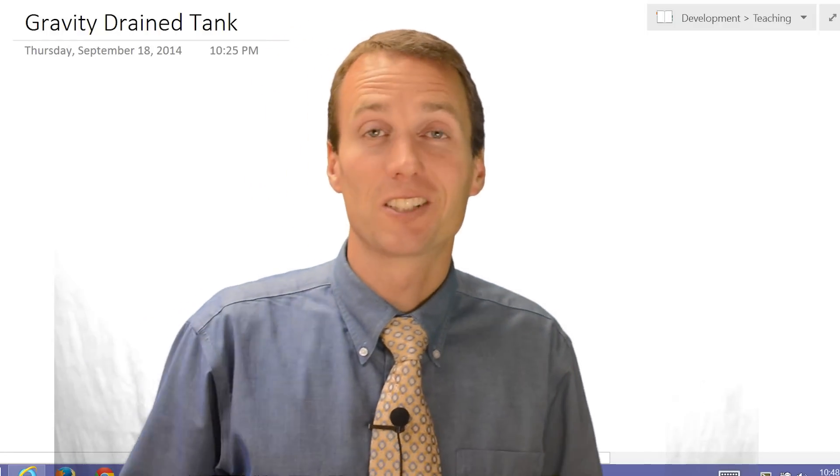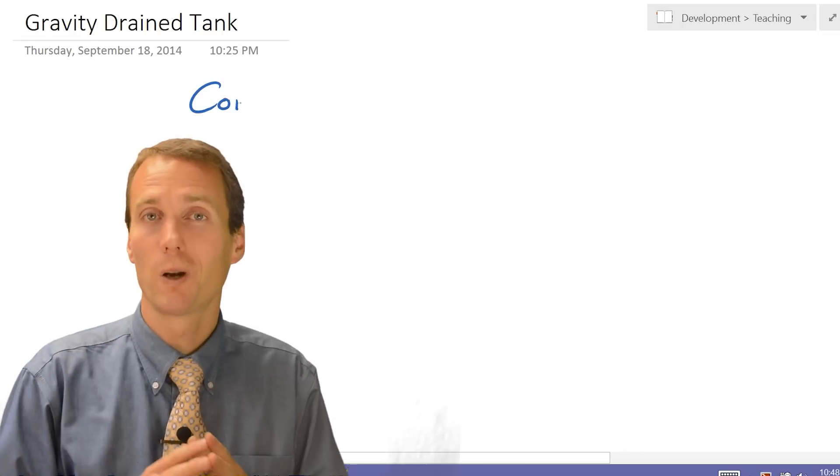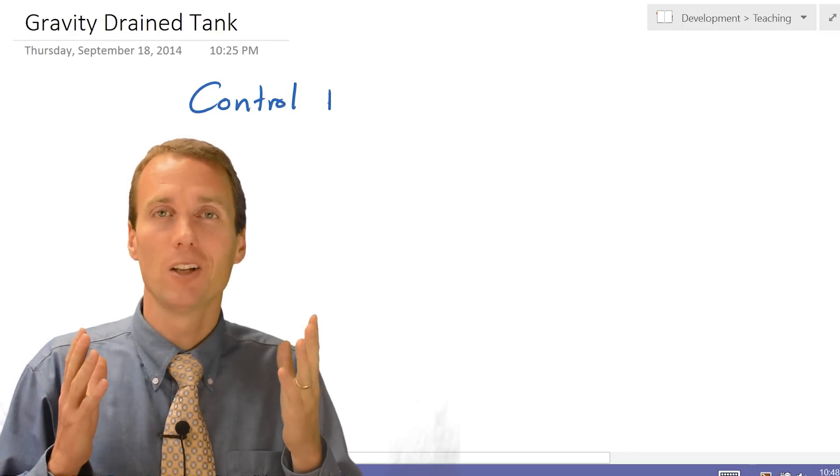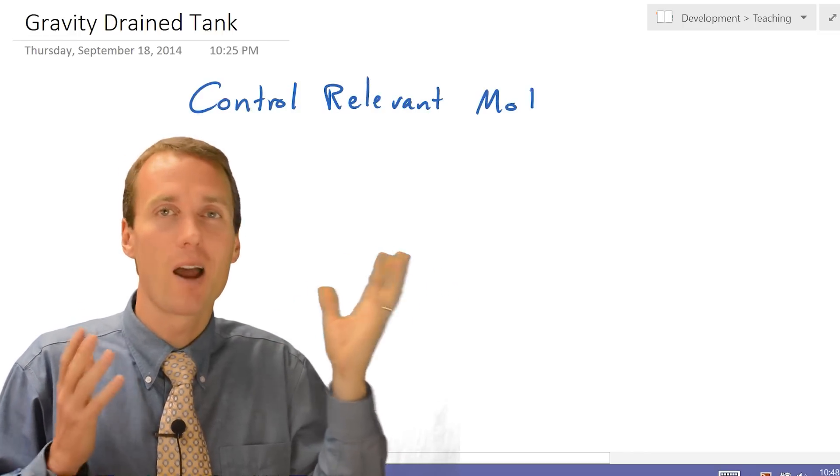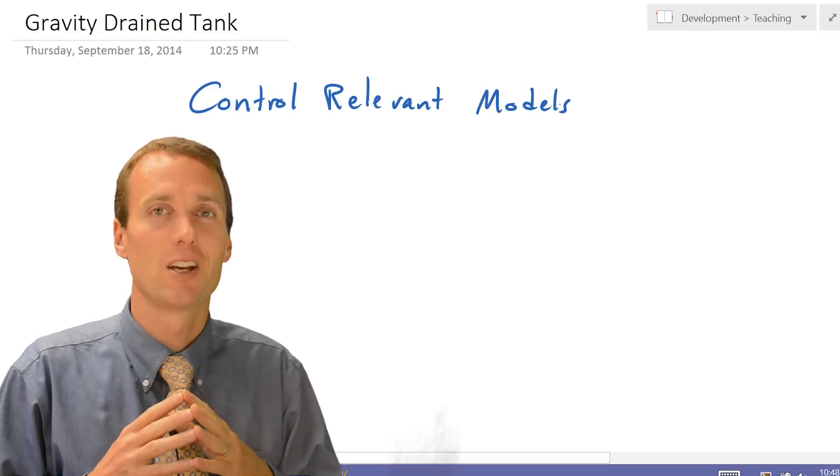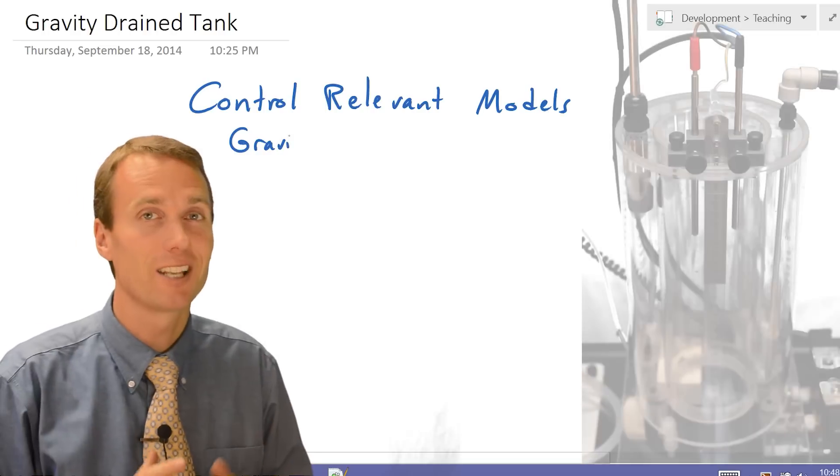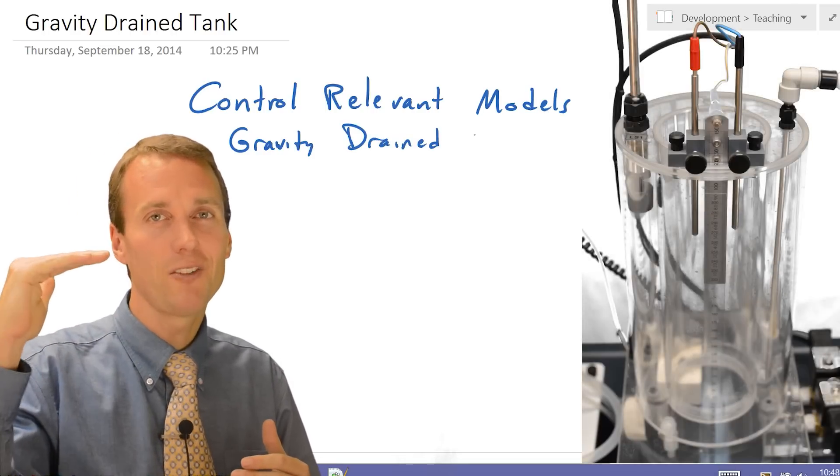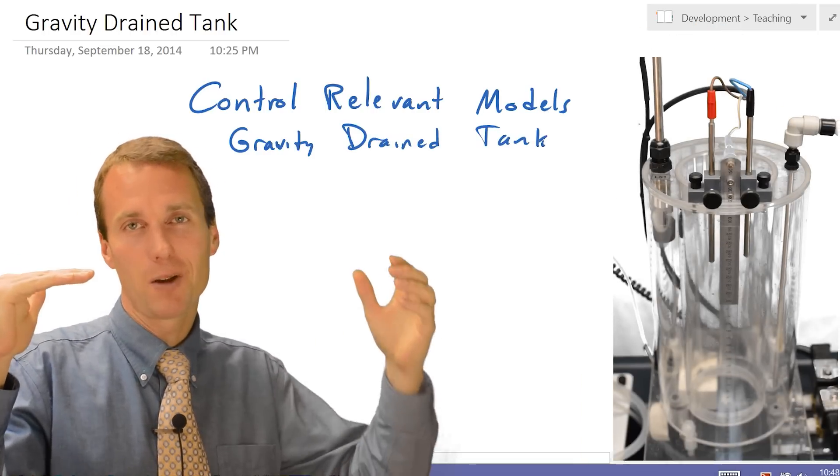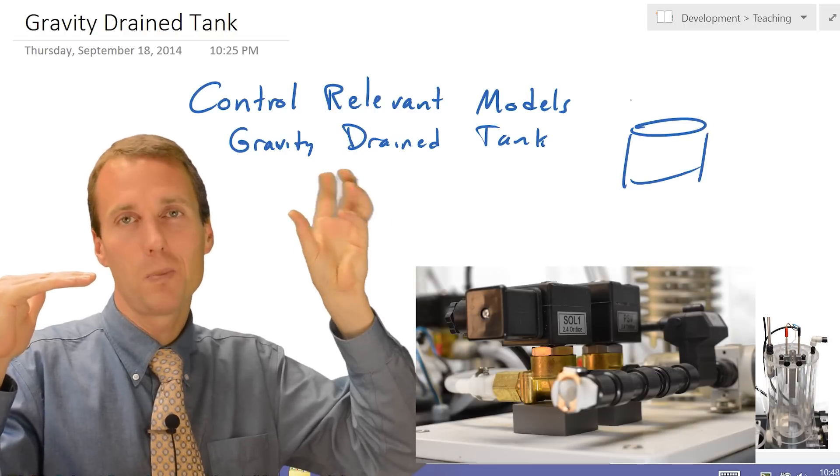Welcome back to Process Dynamics and Control. Today we're going to be talking about control relevant models. How do you develop a model so that it can describe something that you can use to either optimize or control a process? We're going to be looking at a gravity drain tank today. It's just a simple level control. We have a level that we want to try to target and we have a valve that we can either open or close.